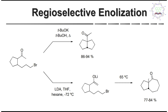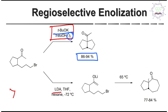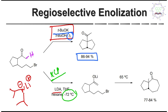You might be confused about why the less bulky proton isn't abstracted. Look at this example: with tertiary butoxide in butanol under reflux (heating), this product is produced in 86 to 94% yield — note the conversion and selectivity. In contrast, if you use LDA — lithium diisopropylamide — which is far more bulky and a stronger base, it results in selective proton abstraction from the less bulky site at minus 72°C, producing the kinetically controlled enolate (KCP).